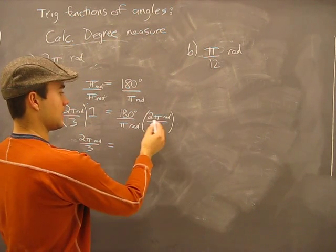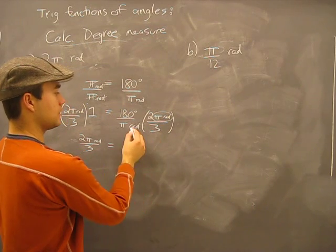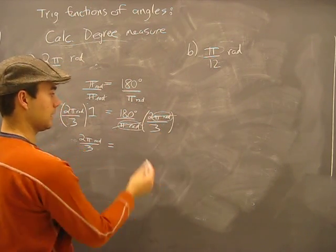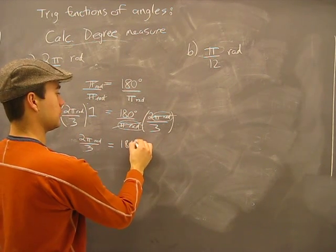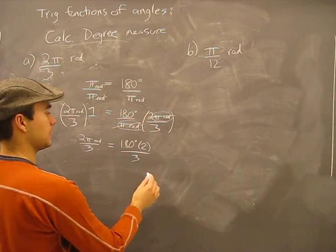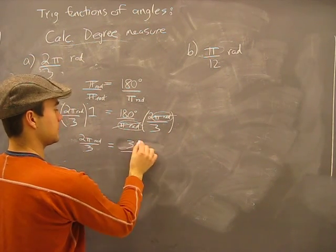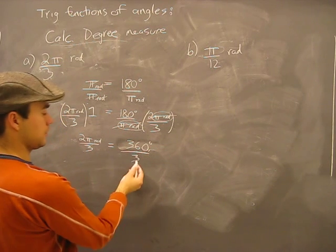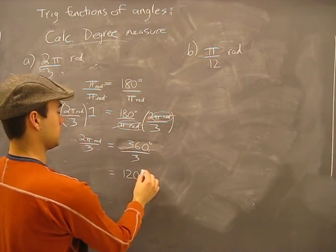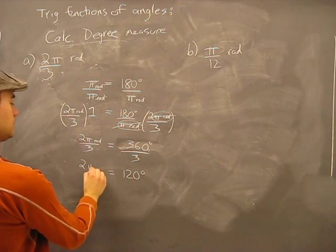First of all, this side here is strictly 2π radians over 3. We're done on this side. Now we're going to solve this to find out what the degrees are. We have π radians in the numerator and π radians in the denominator. Guess what? They cancel out. What are we left with? 180 degrees times 2 divided by 3. Well, 2 times 180 degrees, that's 360 degrees. 360 degrees divided by 3 is 120 degrees.